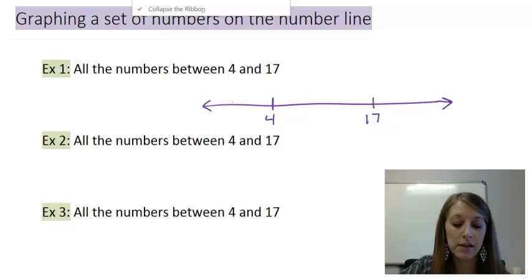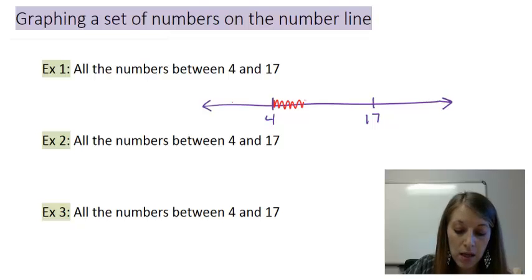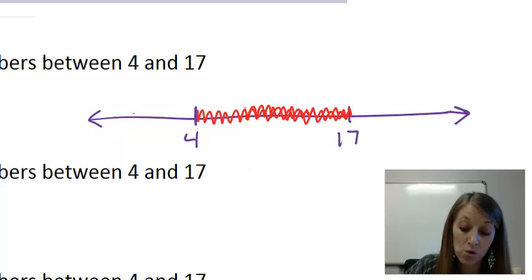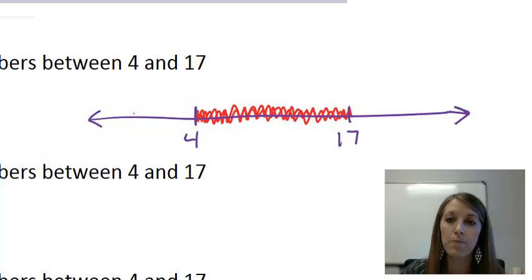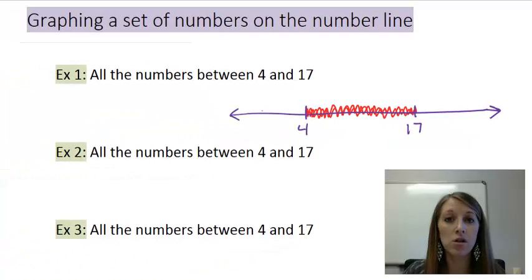I want to represent all the numbers between 4 and 17. The way that we do that is we shade all the numbers between 4 and 17. You need to shade directly on top of the number line. Don't shade above it or below it. We do that by just basically scribbling in between those two numbers. At this point, you might think that you're done, and that's why I've listed three examples here, because I'm going to alter them very small to see that it's actually going to make a big difference overall.